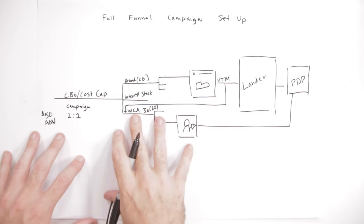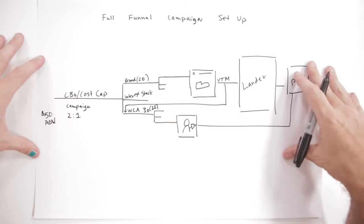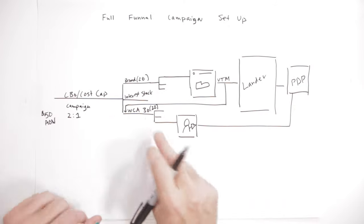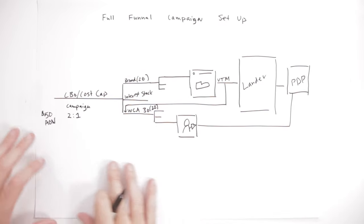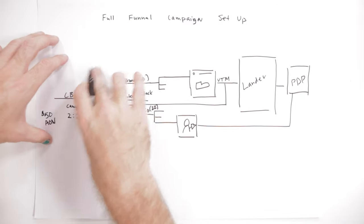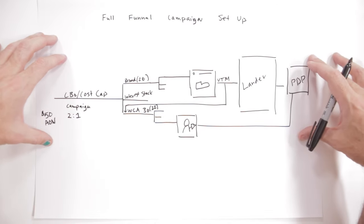So in this case, Facebook is going to allocate the budget relative to the opportunity to create this outcome in each audience. And now when I view my campaign results, I can see the results of the entire funnel.